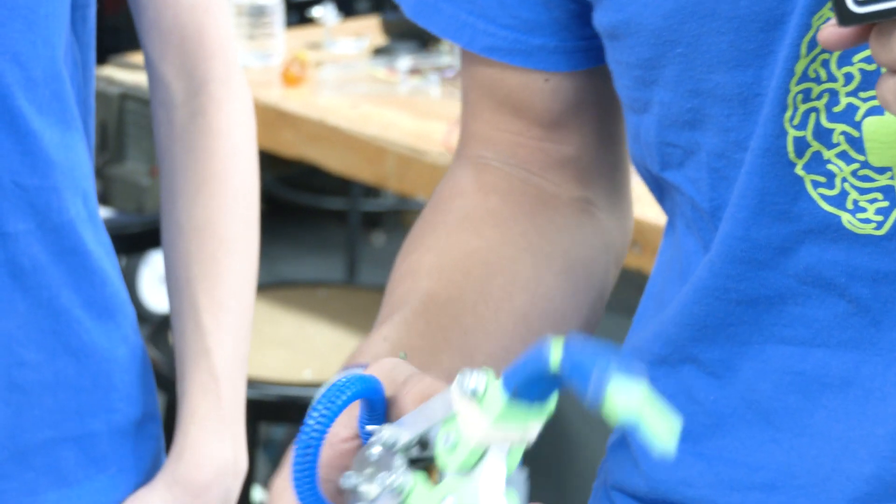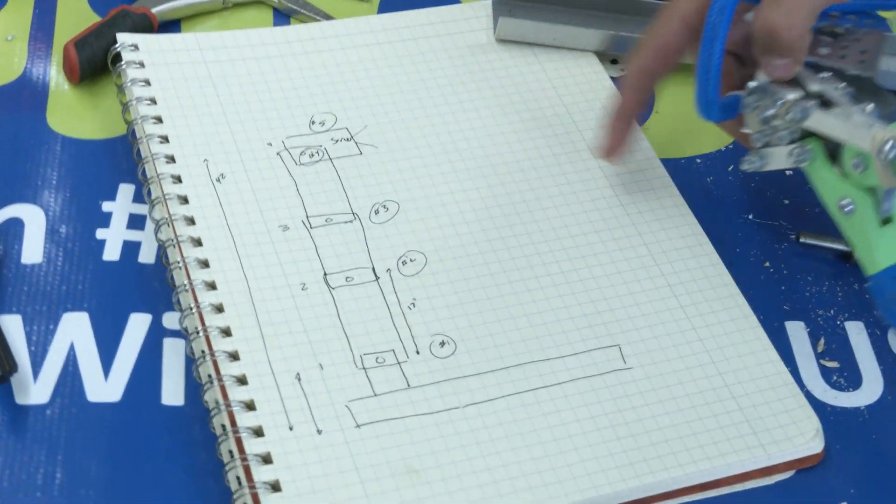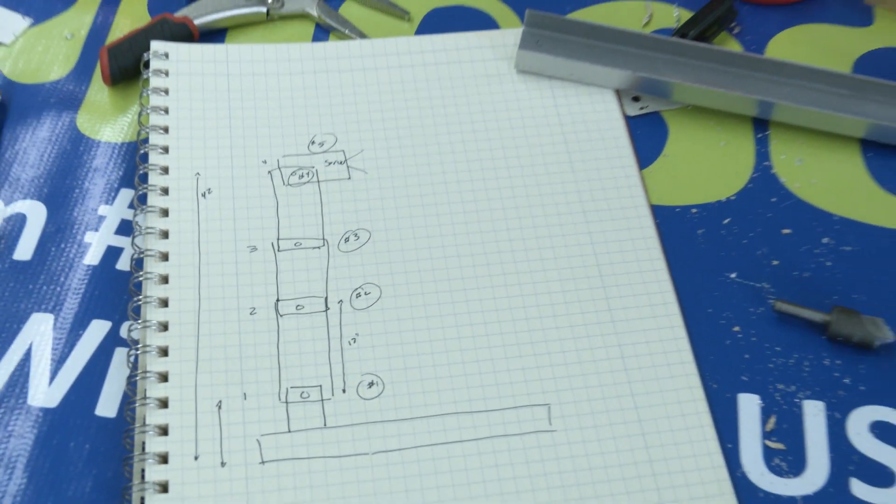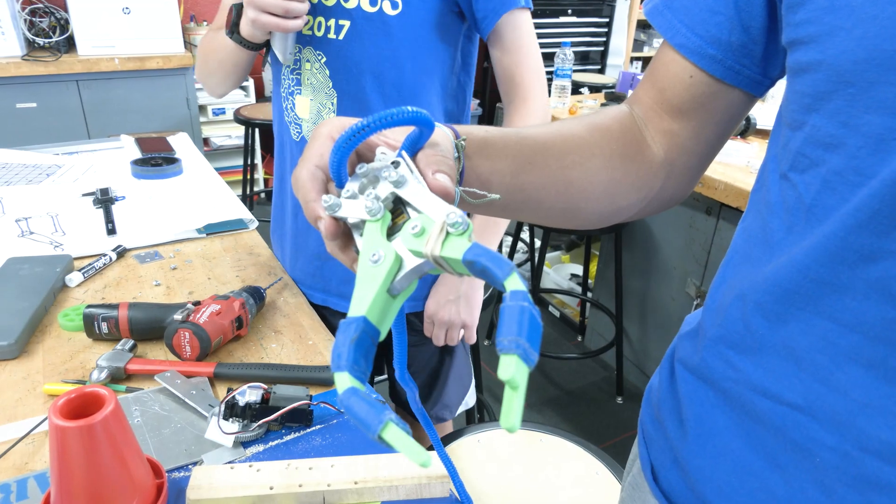So the first concept we have is a three pivot arm that's going to be attached with this claw. That claw is going to help us lift up the cones and drop them onto all the different levels of pillars.